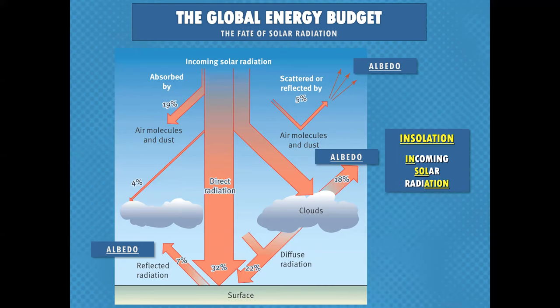Albedo simply means the reflection of energy. Think about why you don't wear a black shirt and black pants and a black hat in summer — it absorbs energy and you feel hotter. You wear white or light-colored clothing — that's the idea of albedo. It ties into the acronym insolation, which is short for incoming solar radiation.